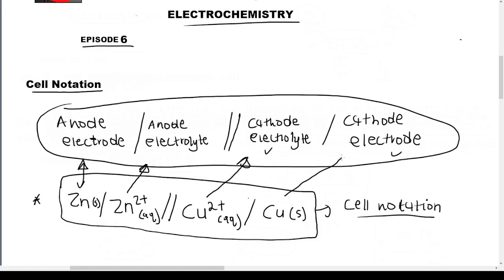The cathode electrolyte is Cu²⁺ and copper solid is the cathode electrode. I hope that makes sense. When we do question papers in the next episodes you will see how the cell notation thing works. Just understand the blueprint: you start with anode electrode, anode electrolyte, cathode electrolyte, and cathode electrode.